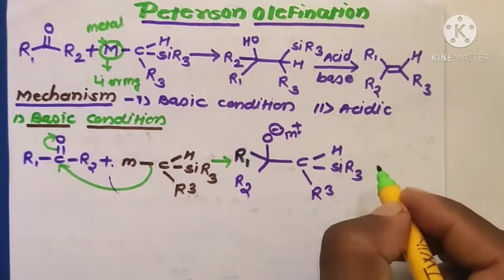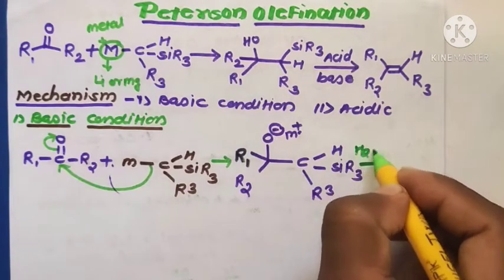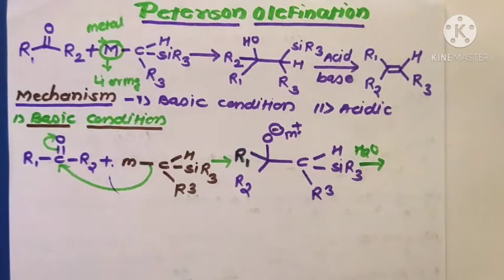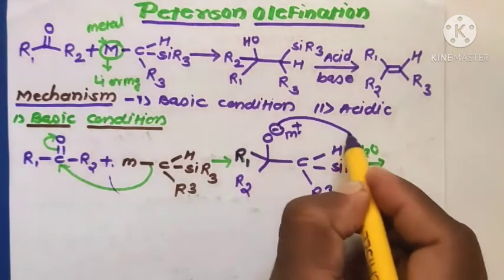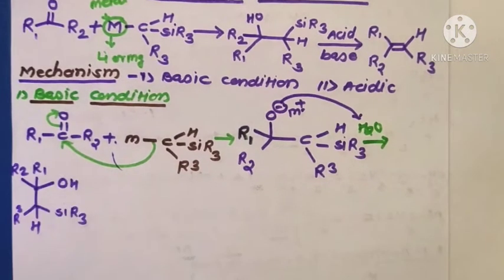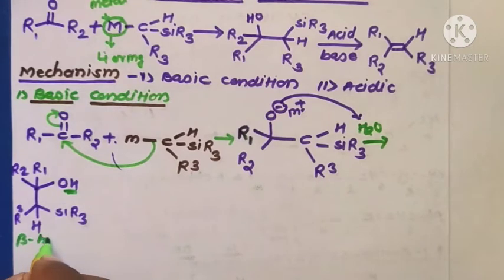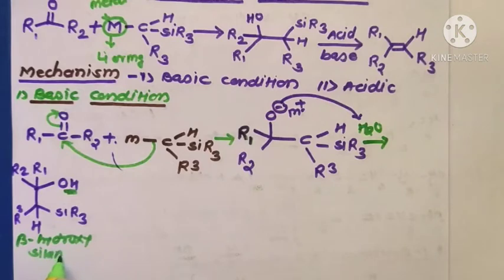This intermediate then reacts in the presence of water molecules — H2O. Here, the O minus ion abstracts an H plus ion to form the beta-hydroxy silane compound. Now there is formation of the beta-hydroxy silane compound.